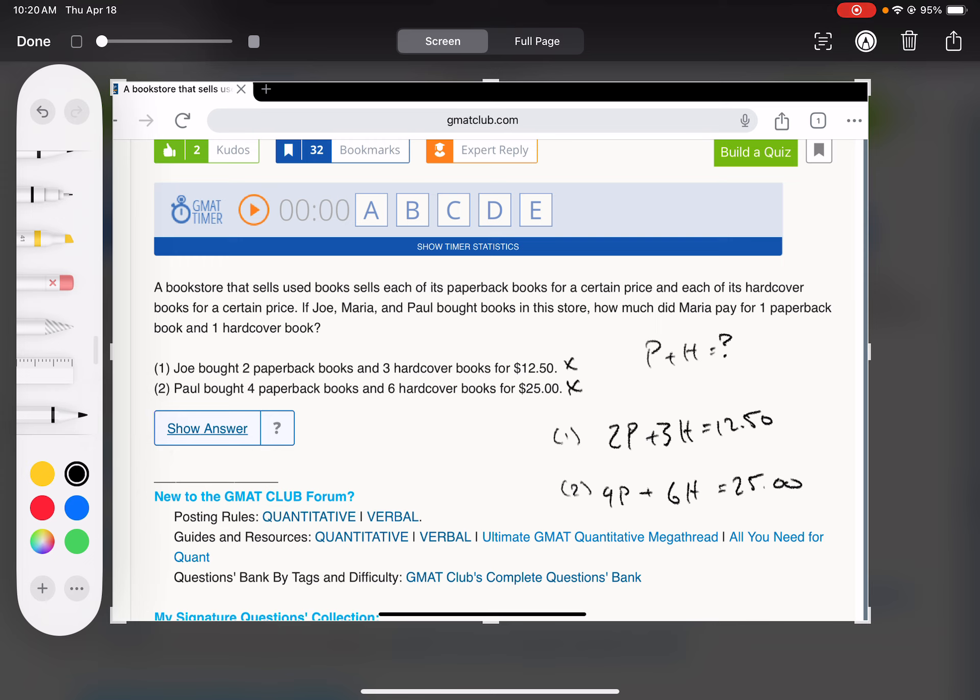So in this case, we actually don't have two equations for our two variables. This one divides by two and we just get the same. It's redundant. We get the same thing we had before. So even together, this is not going to be enough, E.